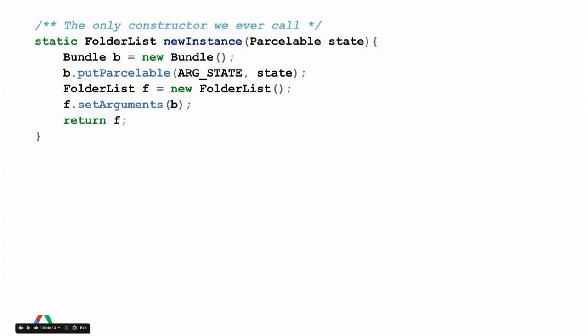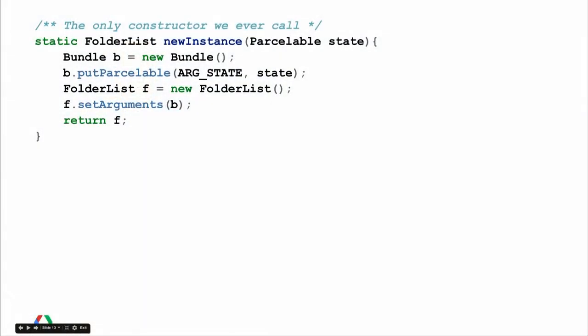This is the pattern we use for constructing all of our fragments. We have a static newInstance method for every fragment that we use. Since there was a single state variable, we pass it to the newInstance method.